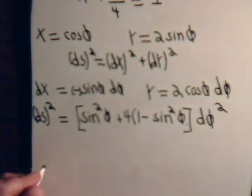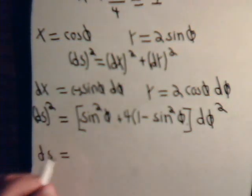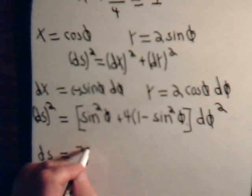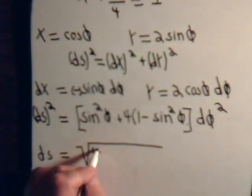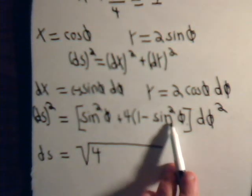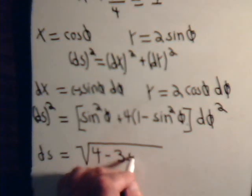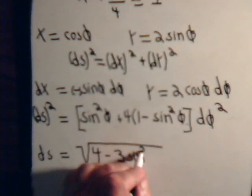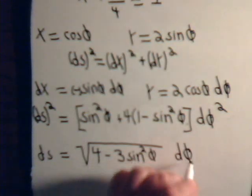We have 1 minus the sine squared of phi d phi squared. Now let's collect terms and take the square root of both sides. We have ds equals square root, we will have 4 minus 4 sine squared plus sine squared, we have minus 3 sine squared phi d phi.